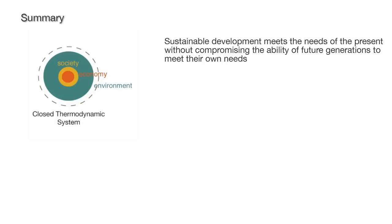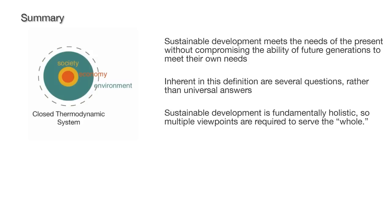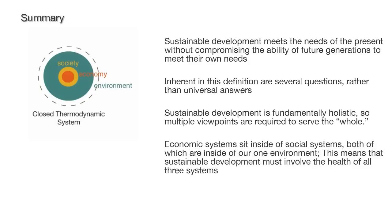Sustainable development meets the needs of the present without compromising the ability of future generations to meet their own needs. Inherent in this definition are several questions rather than universal answers. Sustainable development is fundamentally holistic, so multiple viewpoints are required to serve the whole. Economic systems sit inside of social systems, both of which are inside of our one environment, meaning sustainable development must involve the health of all three systems. In the next video we look at ways to measure sustainability through indicators.